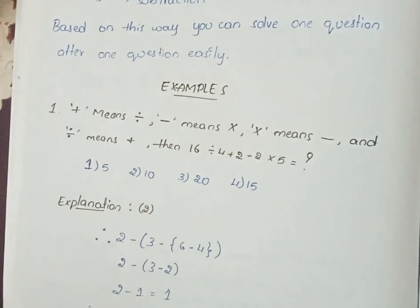Examples: Plus means division, Minus means into, Into means minus, and division means plus. Then 16 divided by 4 plus 2 minus 2 into 5 equals? Options: 1) 5, 2) 10, 3) 20, 4) 15.